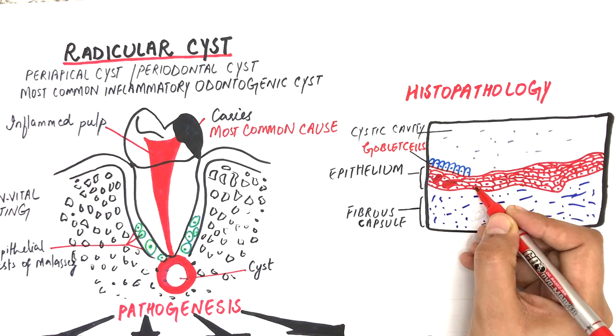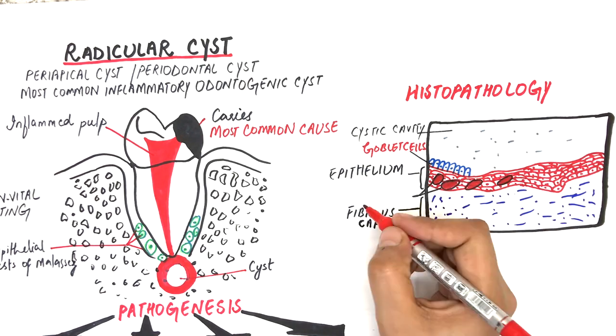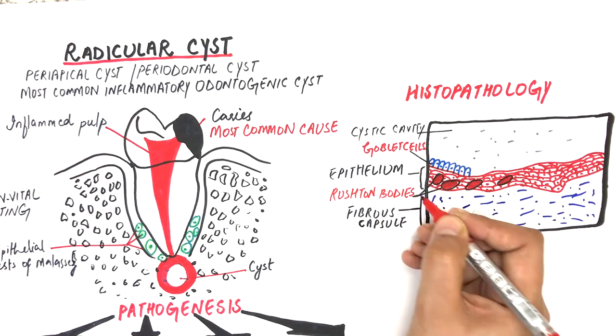The lining epithelium may also demonstrate linear or arch-shaped eosinophilic calcifications known as hyaline or Rushton bodies.